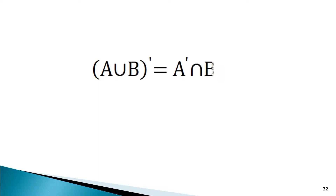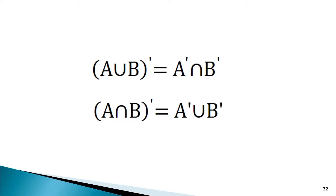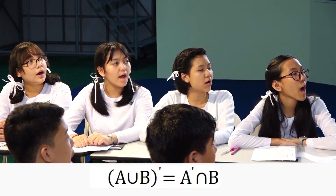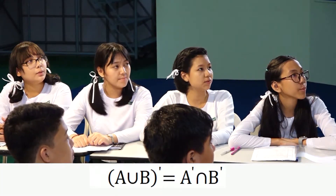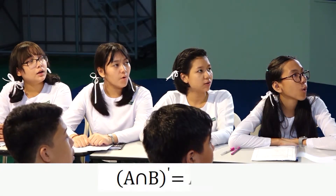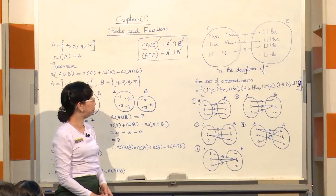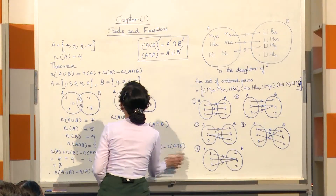Number of A union B, the whole prime, is equal to A prime intersect B prime. And A intersect B, the whole prime, is equal to A prime union B prime. These are De Morgan's Laws.